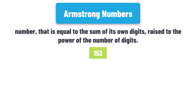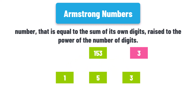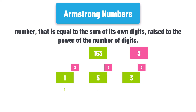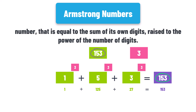For example, the number 153 is an Armstrong number. Let's check why. The number 153 consists of three digits: one, five, and three. To check if it's an Armstrong number, we raise each of these digits to the power of the number of digits, which is three. So we have: one to the power three, five to the power three, and three to the power three. If we sum up the results of each calculation, we get exactly the same number, 153. This means the number 153 is an Armstrong number.